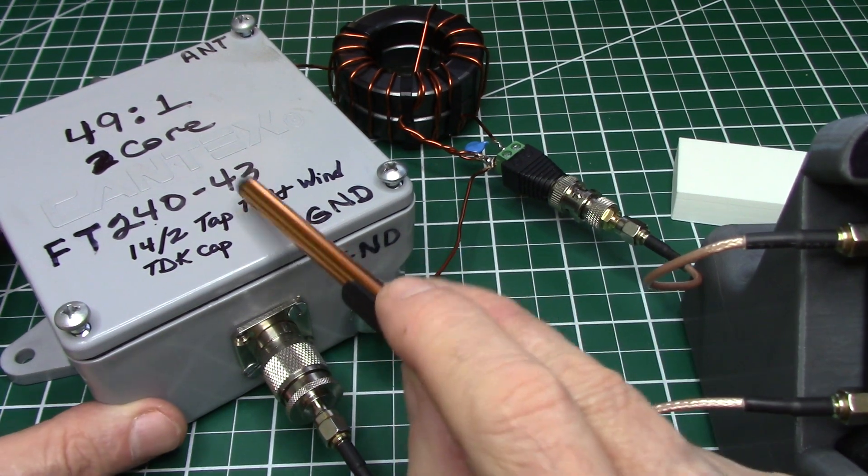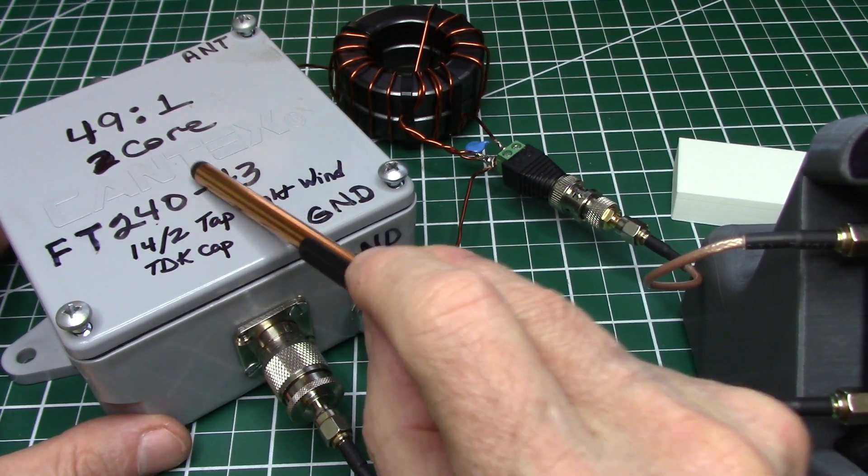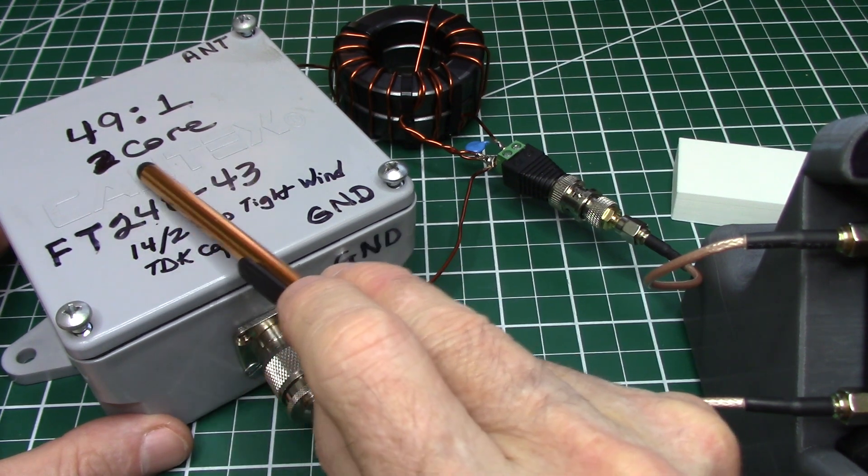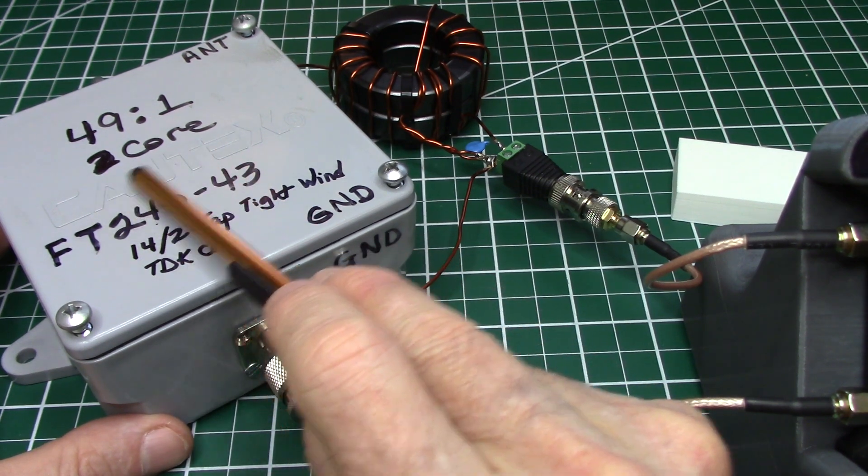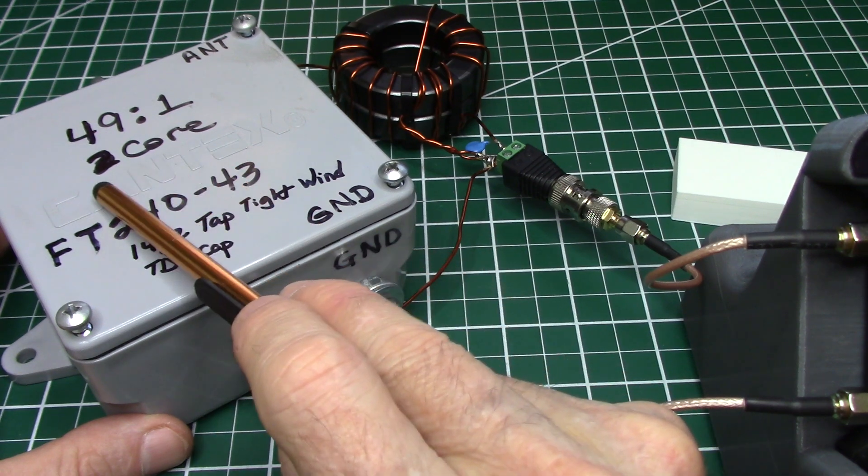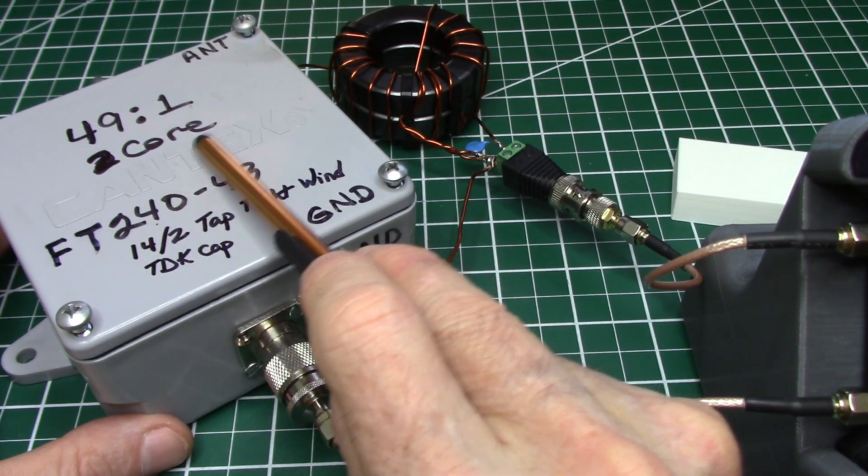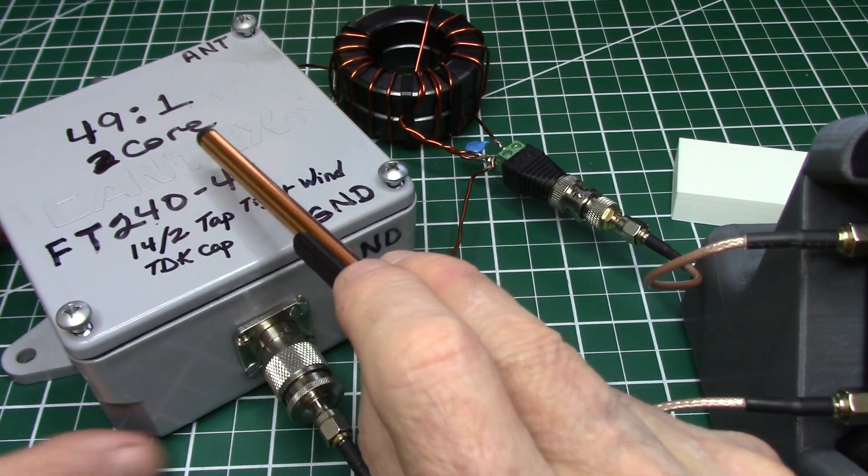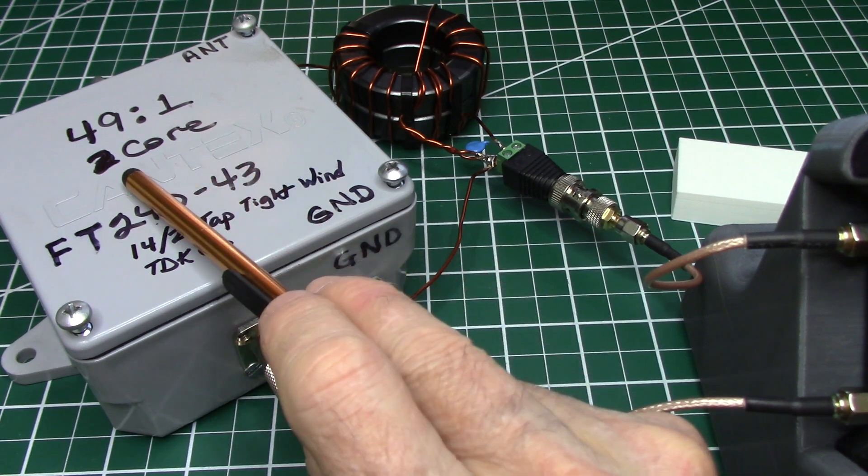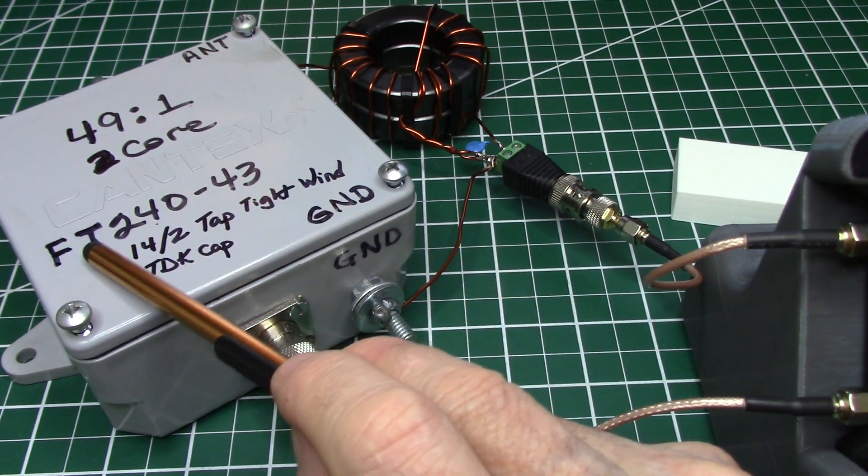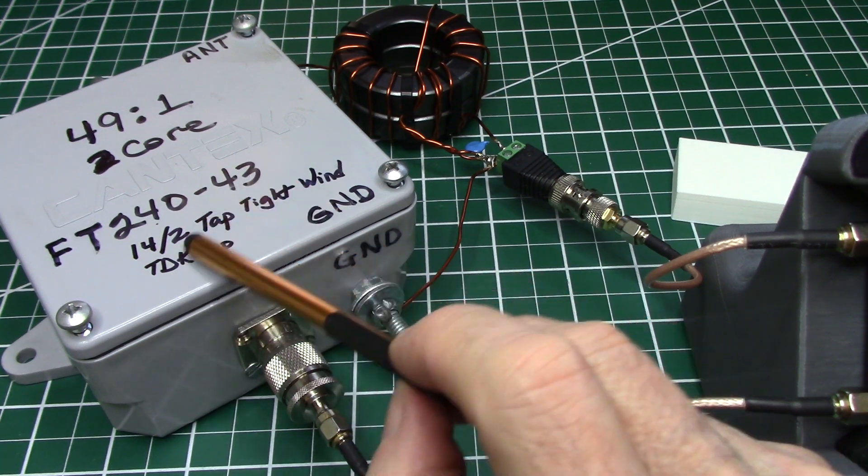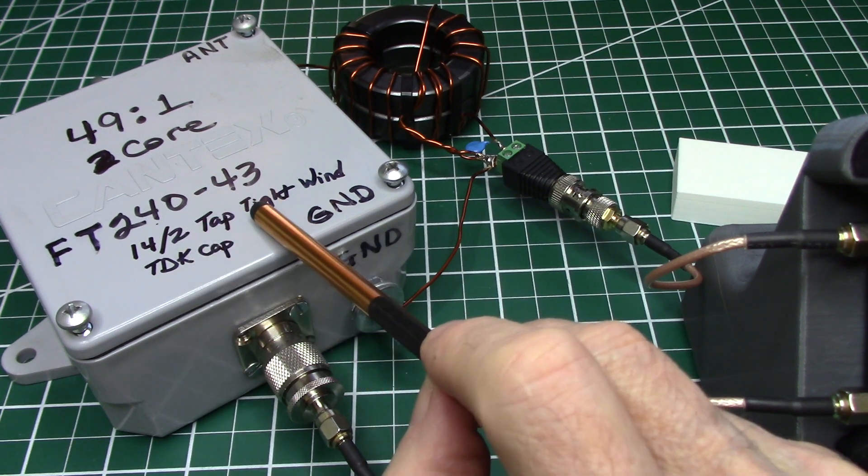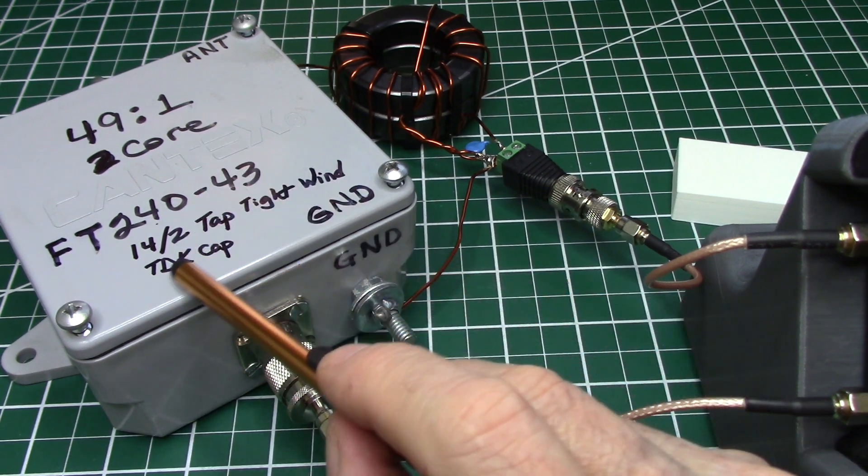Now this is a transformer that I just recently reworked. It's a 49 to one but now it's a two core which will handle a couple of hundred watts no problem. Unless you're running digital you may want to make sure you don't overheat it but it should handle 100 watts no problem with digital. But for SSB it should handle two or three hundred watts. And this is on the FT24043 cores 14.2 with a tap on the second turn and a tight wind 49 to one transformer.